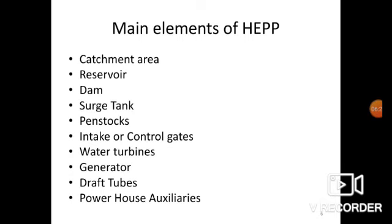Next is the draft tube — an airtight pipe of suitable diameter attached to the runner outlet, conducting water down from the wheel and discharging it under the surface of water in the tail race. Powerhouse auxiliaries: the hydroelectric power plant requires the same basic auxiliaries as any other power plant, such as governor system, exciters, cranes, control panels, and more. Power supply for auxiliaries, cranes, and lighting is usually arranged from a small independent hydraulic turbine and generator.